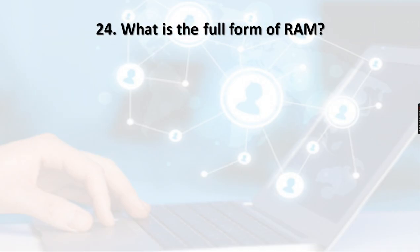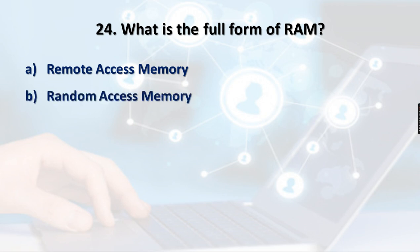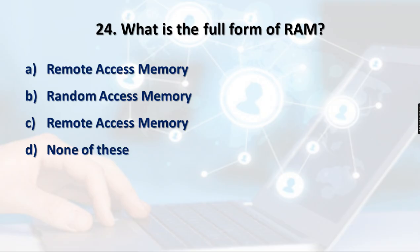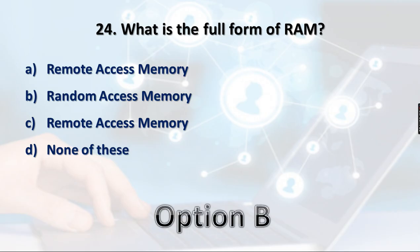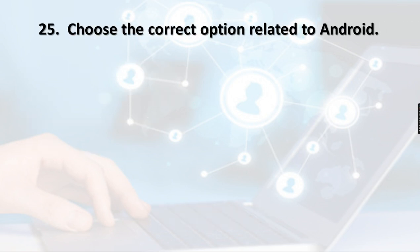Question 24: What is the full form of RAM? Options include Remote Access Memory and Random Access Memory. RAM stands for Random Access Memory — option B is the right answer. RAM and ROM are the two classifications in primary memory: RAM is Random Access Memory and ROM is Read-Only Memory.